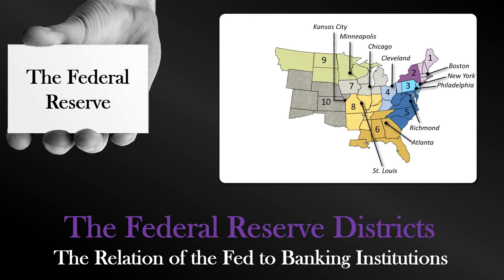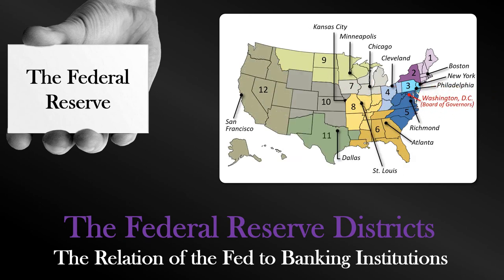A map indicates the 12 Federal Reserve districts and the cities in which the district banks are located. The size discrepancy between districts relates to the population distribution that existed in 1913, when the population was heavily concentrated along the East Coast. Each of the district banks monitors the commercial banks in their region and assists them with clearing of checks and other issues. The Board of Governors of the Federal Reserve System is located in Washington, D.C.